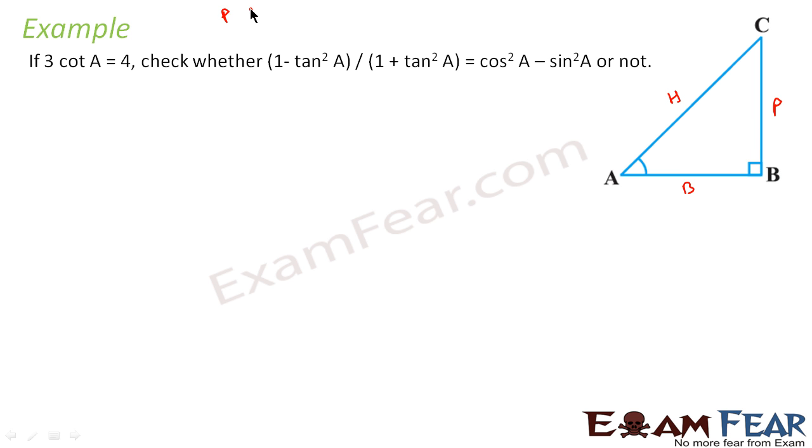We have the same formula: sin, cos, tan on one side and cosec, sec, cot on the other. It says cot A equals 4 by 3 given, and cot A is also equal to B by P. So if I assume B equals 4, P will be 3.